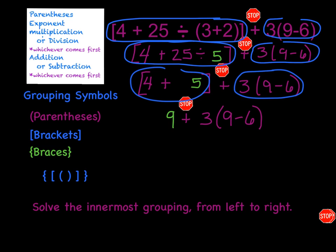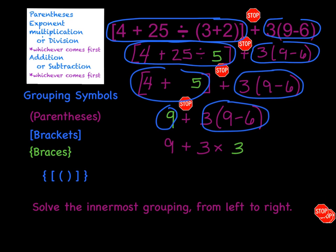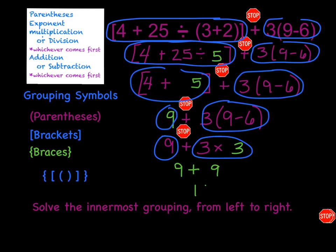I will then move on to the other set of parentheses on this side. Now as I solve in parentheses, nine minus six is going to equal three. When I bring this three down, I have to show that it's three times three. And if I bring the rest down, I will continue until I get down to just nine plus nine, and my answer will be eighteen.